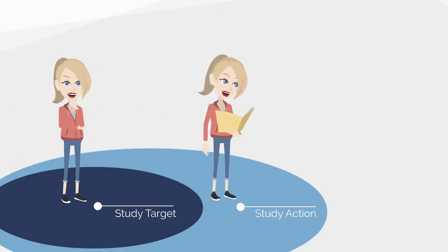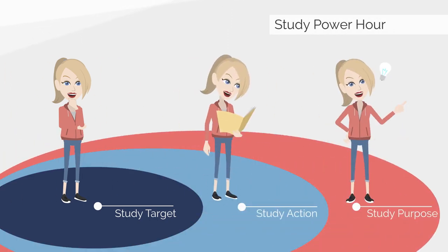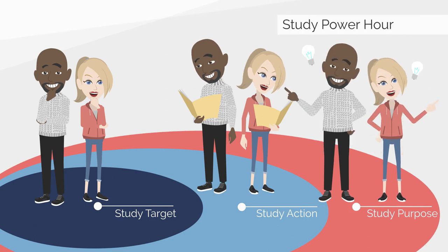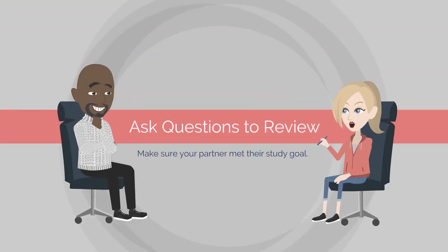Have students work alone first to complete their own study power hour. Then have students pair up and review each step of the model. Partners should ask questions to review so as to make sure their partner met their study goal.